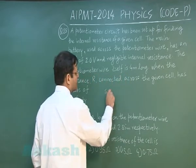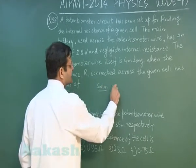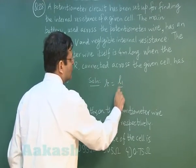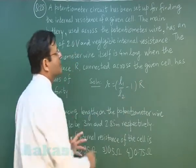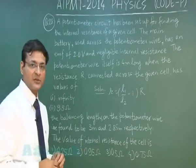If you go by the standard formula for internal resistance, it is simply l1 by l2 minus 1 into R. This is a standard formula and the one and only formula for finding out the internal resistance of a cell.